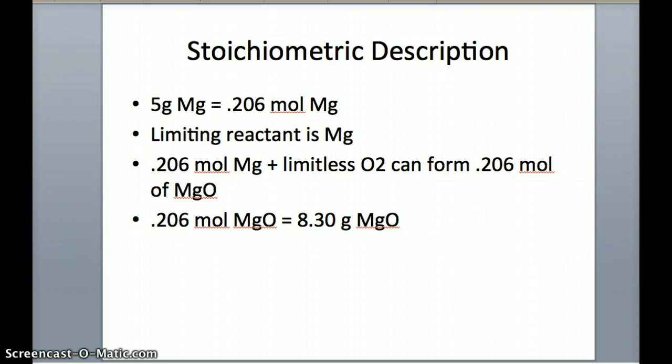This limiting reactant will produce 0.206 moles of magnesium oxide because the mole-to-mole ratio given to us by the balanced stoichiometric equation is one to one.